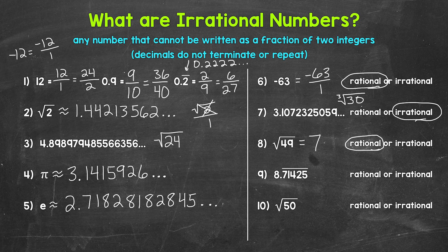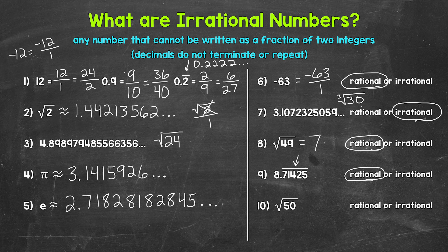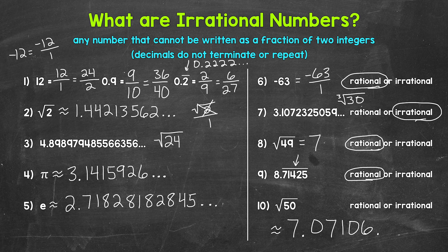Moving on to number 9, we have 8.71425 with a bar above 71425, which shows us that that decimal repeats. Any repeating decimal is rational, so this is rational. Lastly, for number 10, we have the square root of 50. 50 is not a perfect square, so this is not going to be rational. The square root of 50 is approximately 7.07106, and this continues on forever without terminating or repeating — so the square root of 50 is irrational.